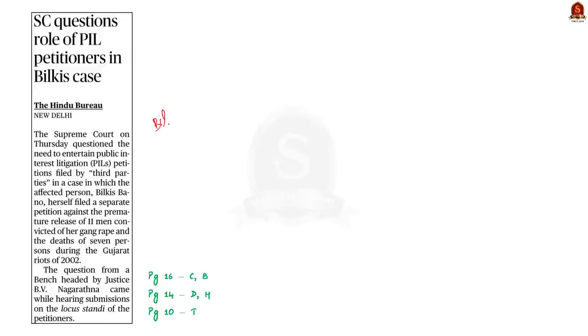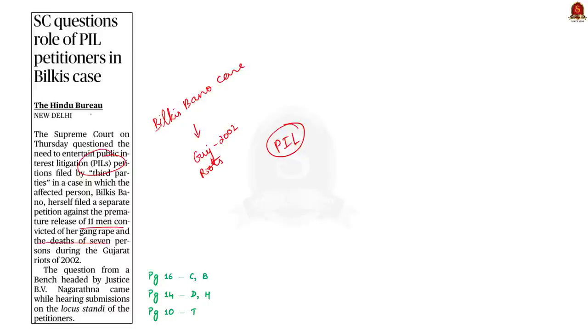Recently, 11 men who were convicted in the Bilkis Banu case were prematurely released. The Bilkis Banu case is related to the 2002 Gujarat Riots. A public interest litigation was filed against this release of convicts before the end of their punishment period. The Supreme Court questioned the need for the public interest litigation filed by third parties in the case.